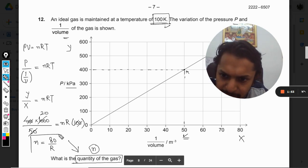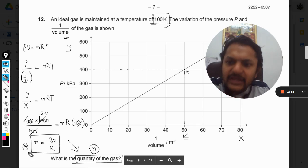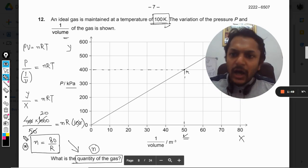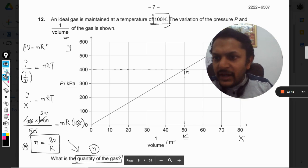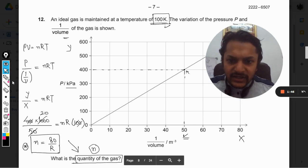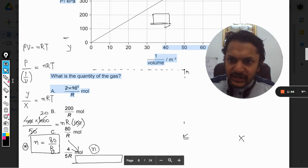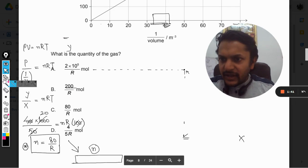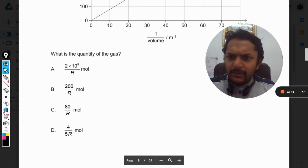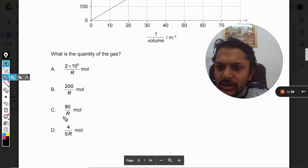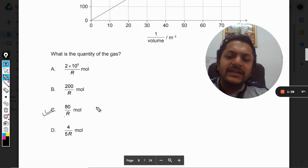This will be the number of moles. Now our answer is 80/R. Let us find what are the options here. 80/R, so there we are, C is the answer for us.